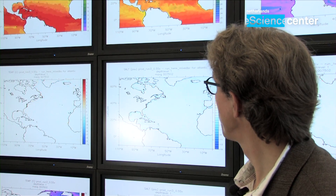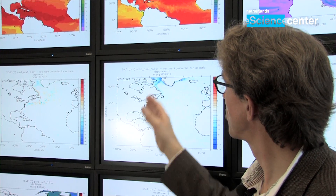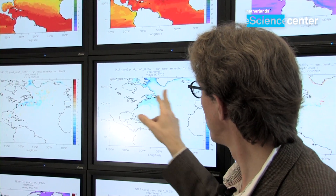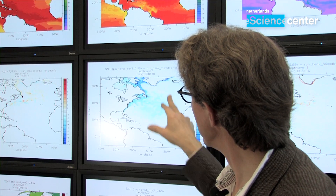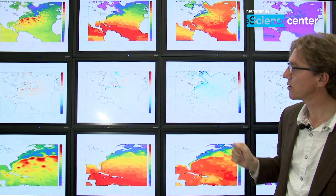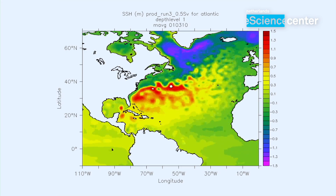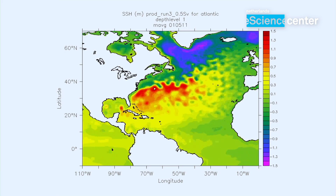Findings of these simulations are used by many policymakers. An example of a simulation is shown behind me here — this is an extreme scenario where freshwater melting from the Greenland ice sheet is dumped into the Atlantic. Here you see the freshwater anomaly in the North Atlantic and the change in the ocean circulation, reflected in the sea level.